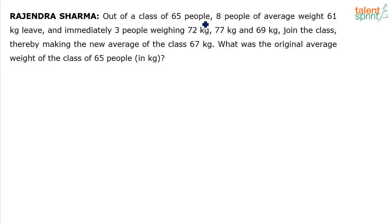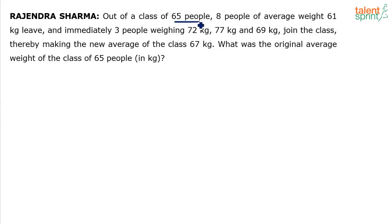Out of a class of 65 people, eight people of average weight 61 kg leave. Immediately, three people weighing 72 kg, 77 kg, and 69 kg join the class, making the new average of the class 67 kg. Eight people whose average weight was 61 kg leave this group, and then three people weighing 72, 77, and 69 join, making the new average 67.